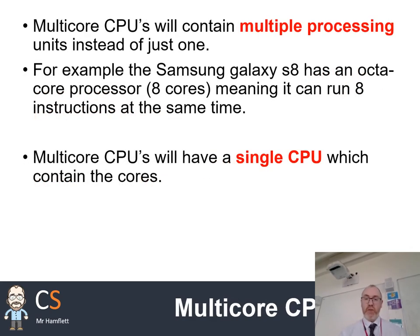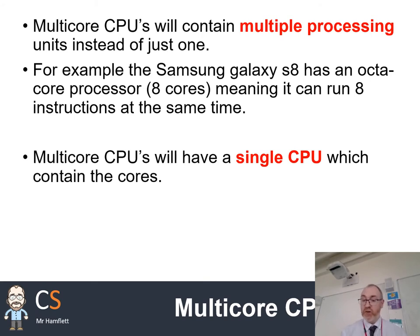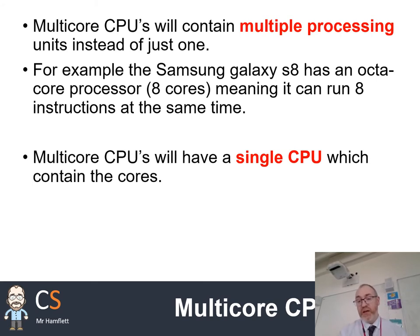Multi-core CPUs contain multiple processing units instead of just one. For example, the Galaxy S8 has an octa-core processor — eight cores — which is massive for a mobile device. That means it can run eight instructions at the same time, but that does not mean your apps will run eight times faster. Most programs are not designed to work on multiple cores — they were designed for a single core. A multi-core CPU is a single CPU containing multiple cores.